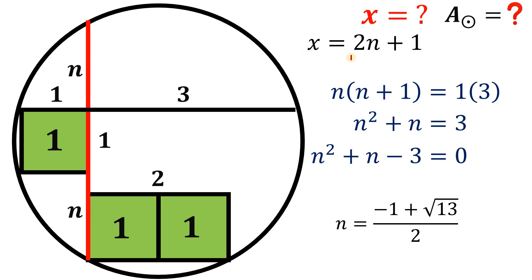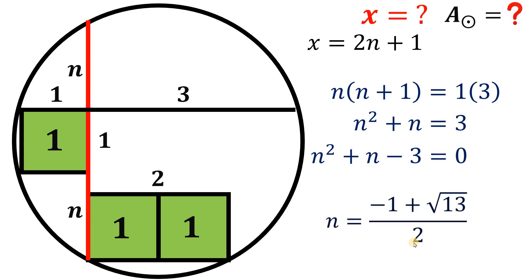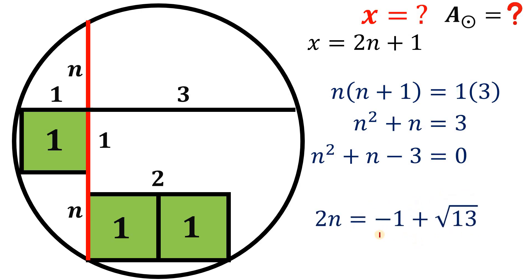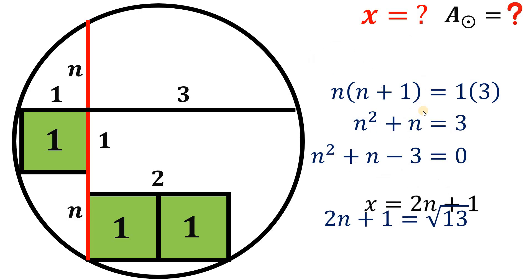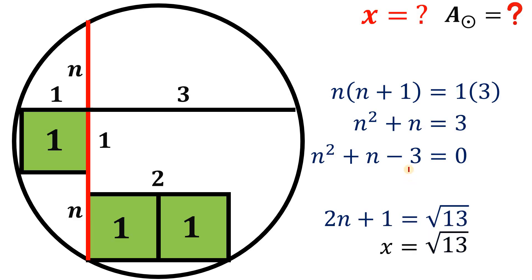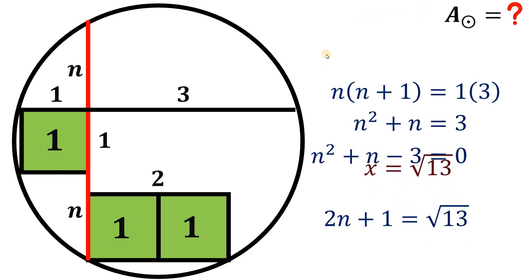Now notice that x equals 2n plus 1. If we multiply the expression for n by 2, we get 2n equals negative 1 plus square root of 13. Adding 1 to both sides gives 2n plus 1 equals square root of 13. Therefore, x equals the square root of 13. The length of segment x is square root of 13 units.